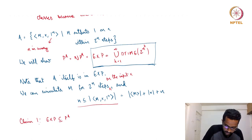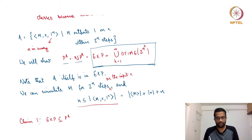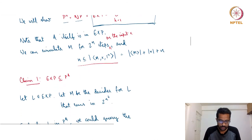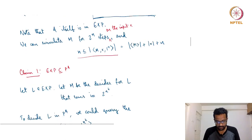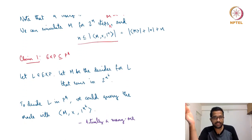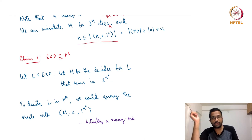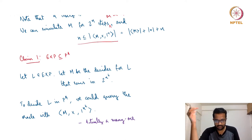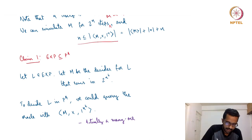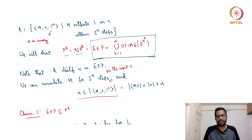What we will show is that P^A and NP^A are both equal to EXP. First, we will show that EXP is contained in P^A. Whenever we have a containment like this to show, we take an arbitrary language from the left-hand side and show it belongs to the right-hand side. Let L be an arbitrary language in EXPTIME, which means there is an EXP-time decider M for L running in 2^{n^k} time.